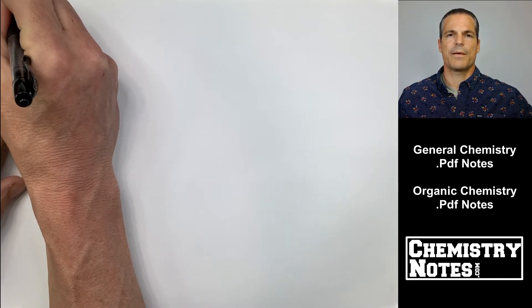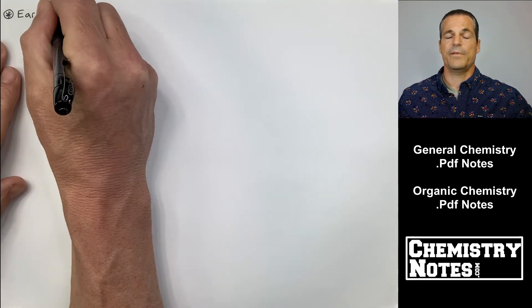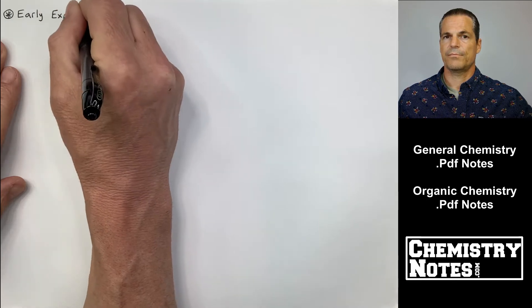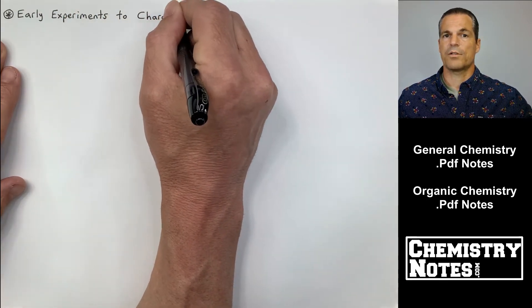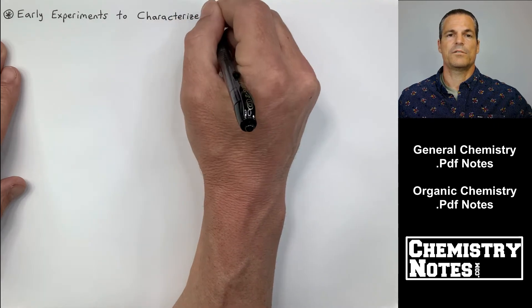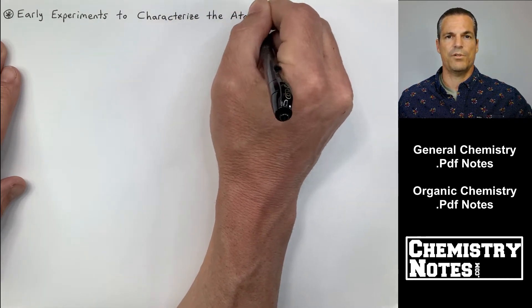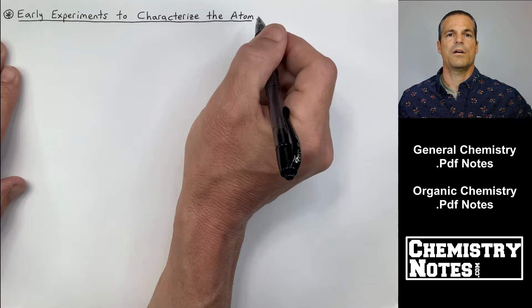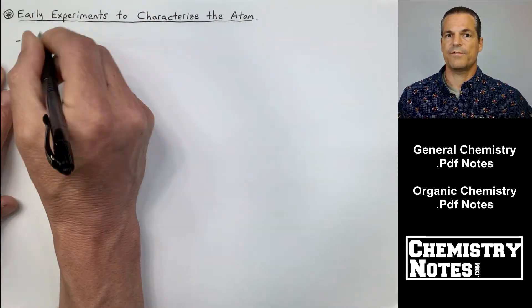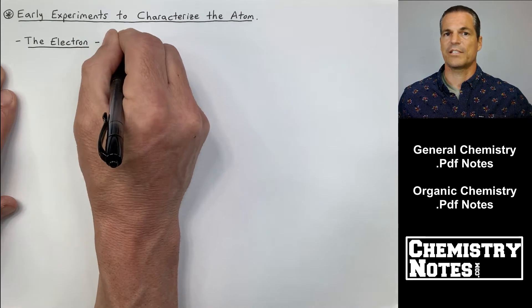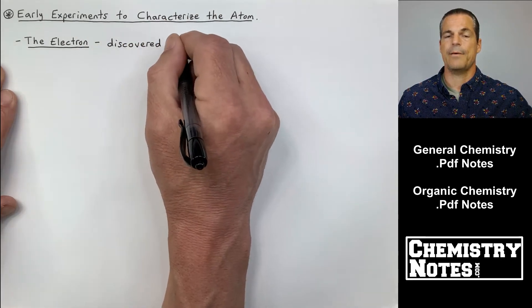Hi guys, Justin here from ChemistryNotes.com and we've been talking about Section 2. Section 2 is kind of like Chapter 2 and this is Atoms, Molecules, and Ions. So today's video is video number 2 from Section 2 of General Chemistry Notes. Today, this video we're going to talk about some of the early experiments that were used to characterize the atom.